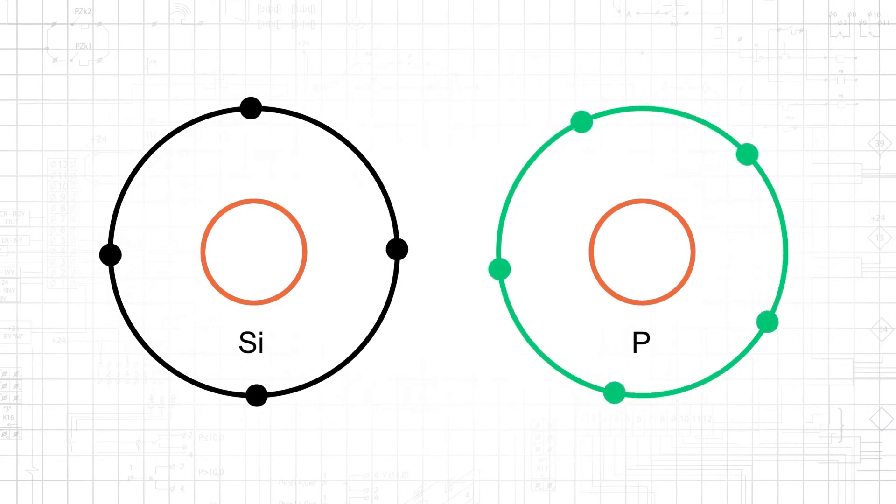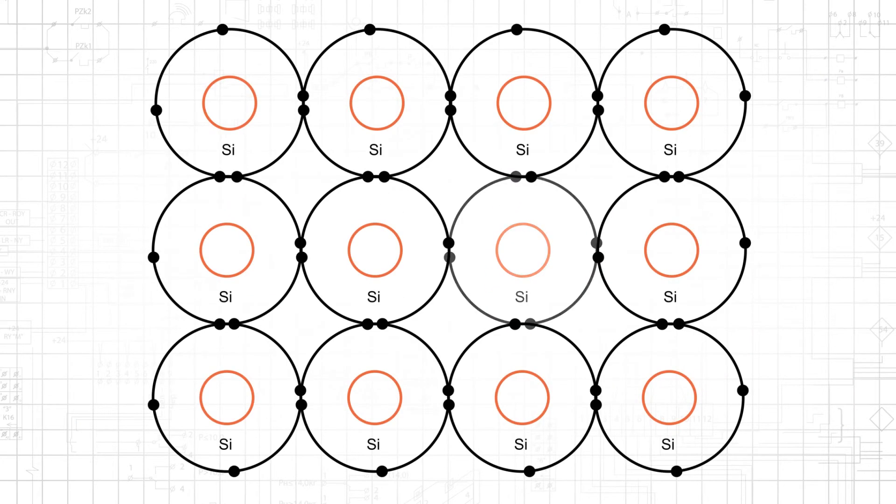A group 5 element, such as phosphorous, has 5 valence electrons. And if we inject phosphorous into the silicon, each injected atom will introduce a free electron into the semiconductor's crystal lattice.